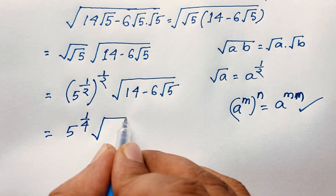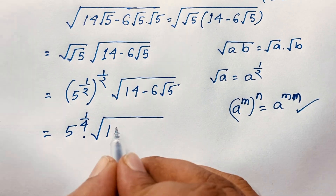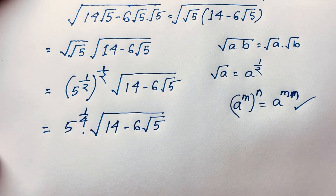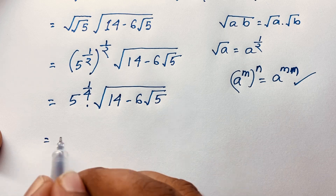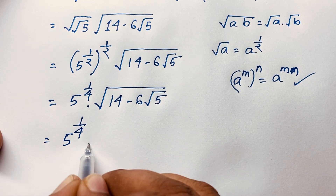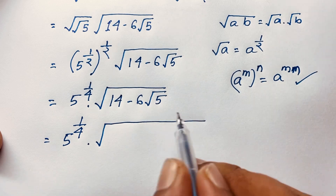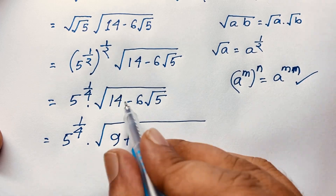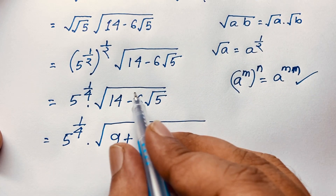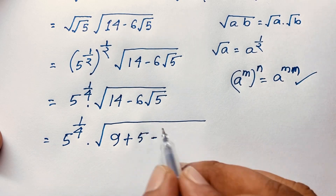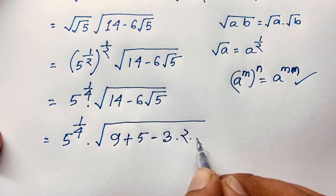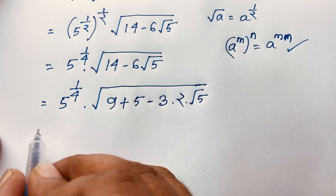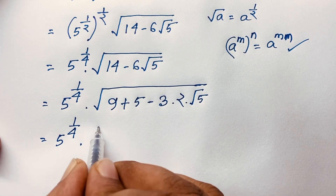The expression becomes 5 to the power 1/4, times the square root of (14 minus 6√5). Now I can rewrite 14 as 9 plus 5, and 6 as 3 times 2, giving us 5^(1/4) times √(9 + 5 - 3·2·√5).